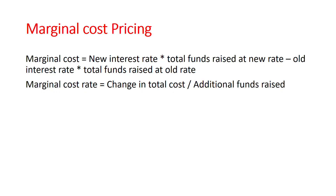We can increase the price to 9%. So the key formula is: total funds raised at new rate minus old interest rate into total funds raised at old rate. The marginal cost rate equals change in total cost divided by additional funds raised. For example, deposit offers of 5 million or 10 million deposit.